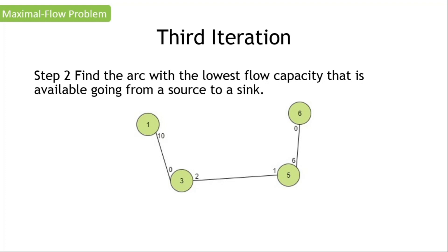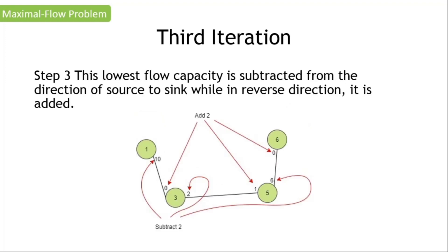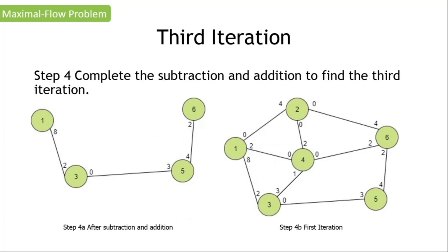Step two: choose the lowest flow capacity. Step three: this lowest flow capacity is subtracted or added as usual. So ten minus two equals eight, zero plus two equals two, two minus two equals zero, one plus two equals three, six minus two equals four, and zero plus two equals two. For our third iteration, we now find this updated network model on the right side of our screen.